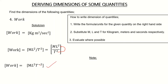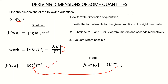Before moving on, I want to note something very important: energy and work have the same dimension. As you can see, they have the same dimension — that is why work and energy are both measured in joules. This is how we find the dimensions of quantities. If you have any questions, feel free to leave them in the comment box below. Thank you.